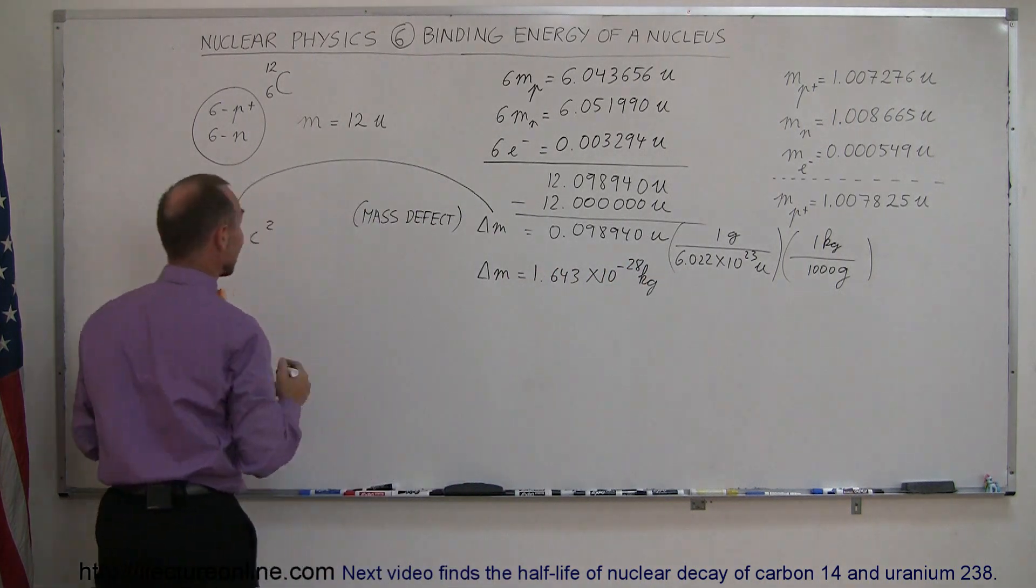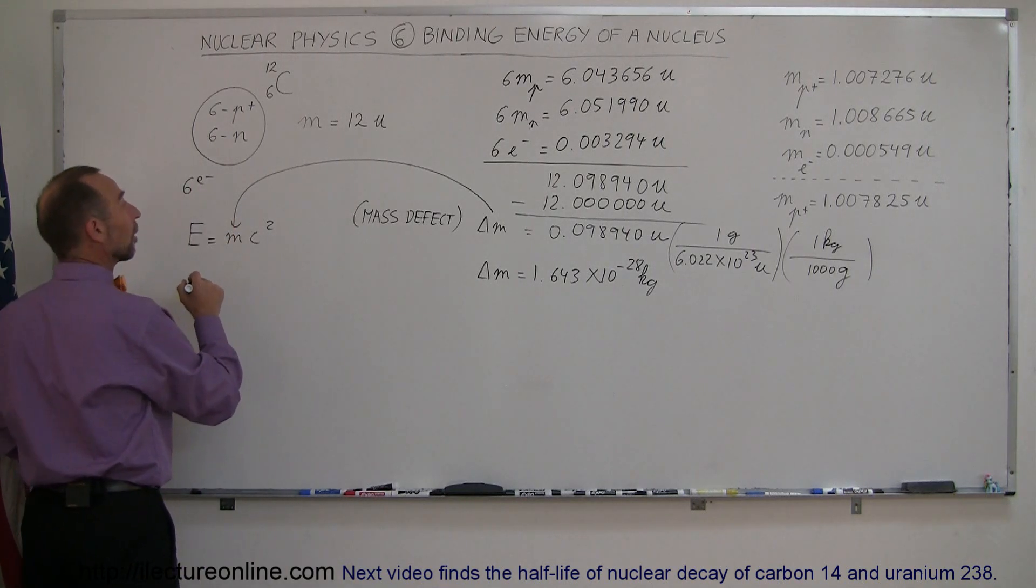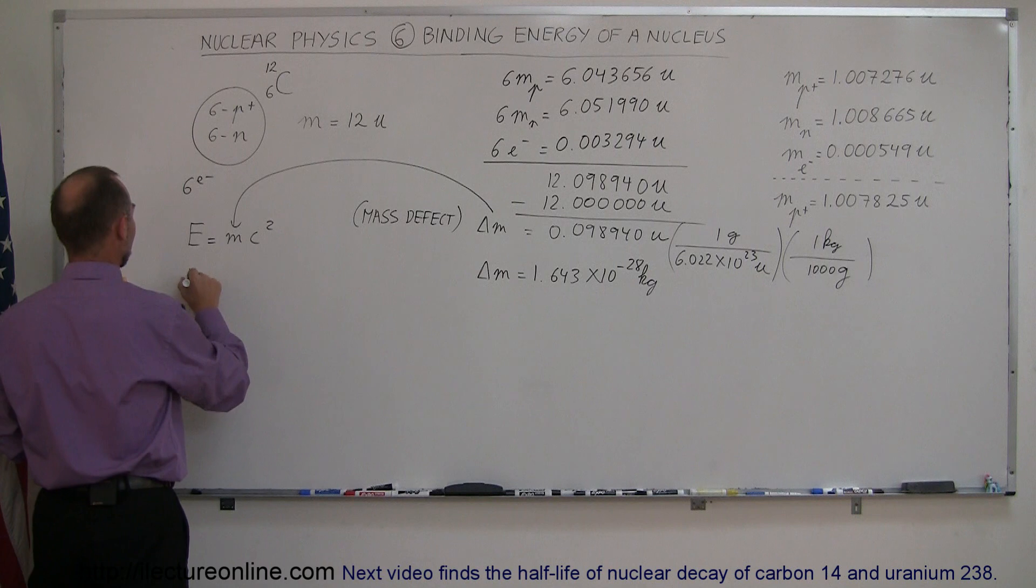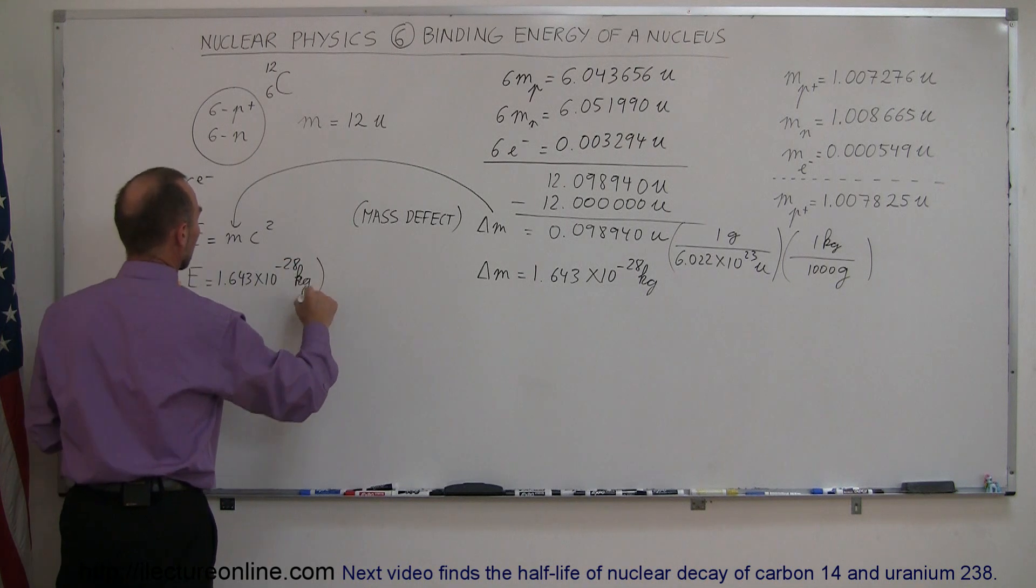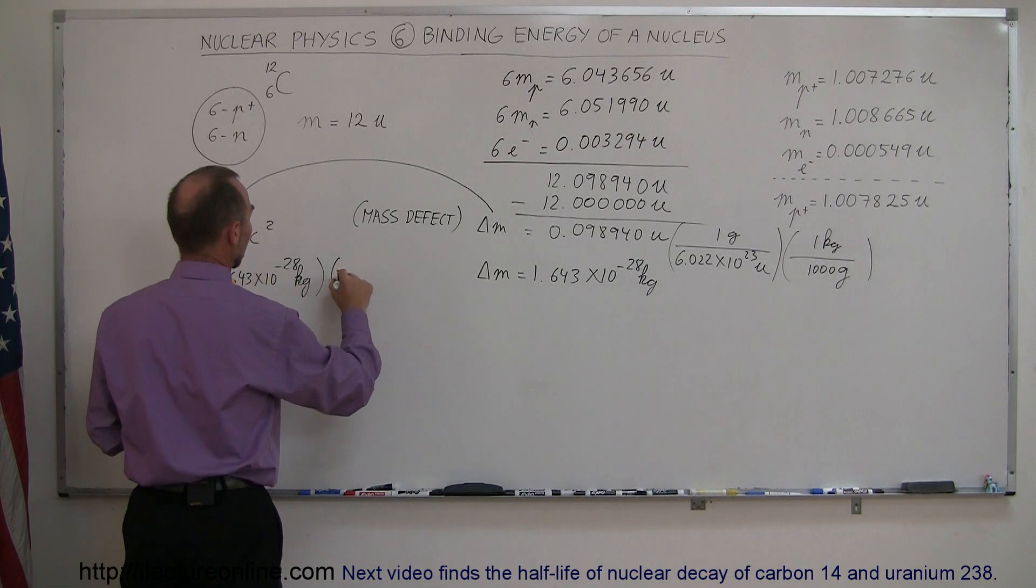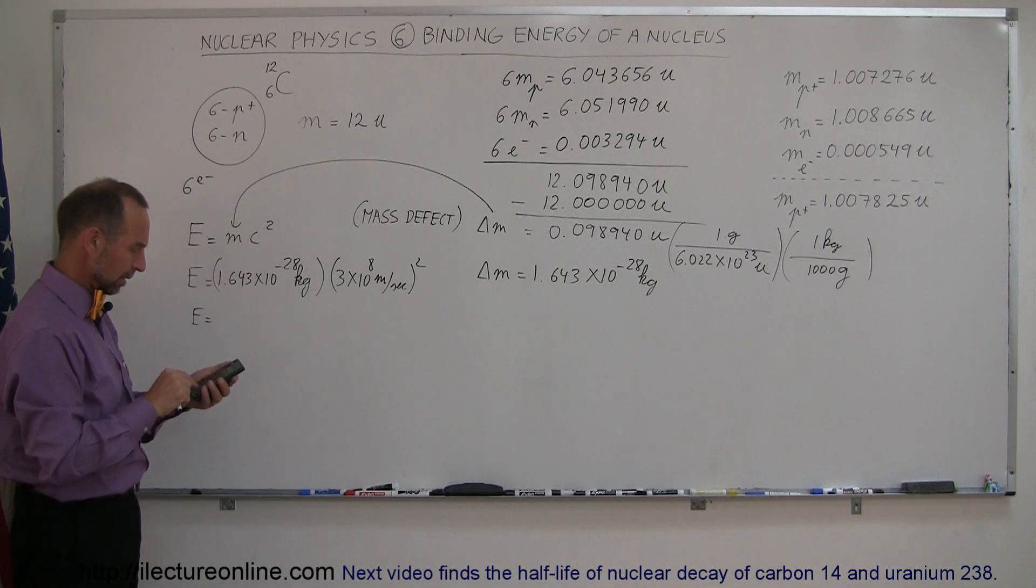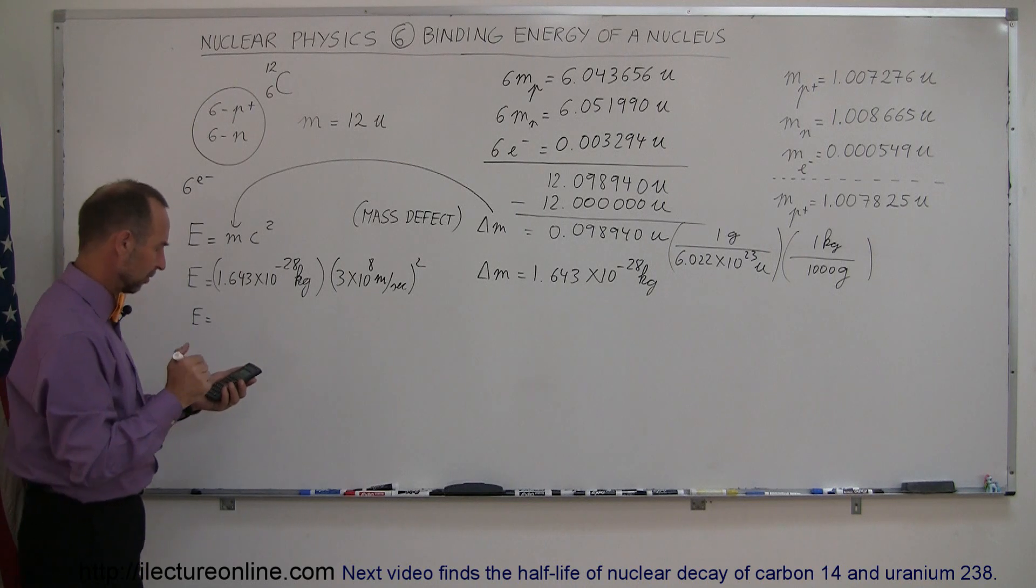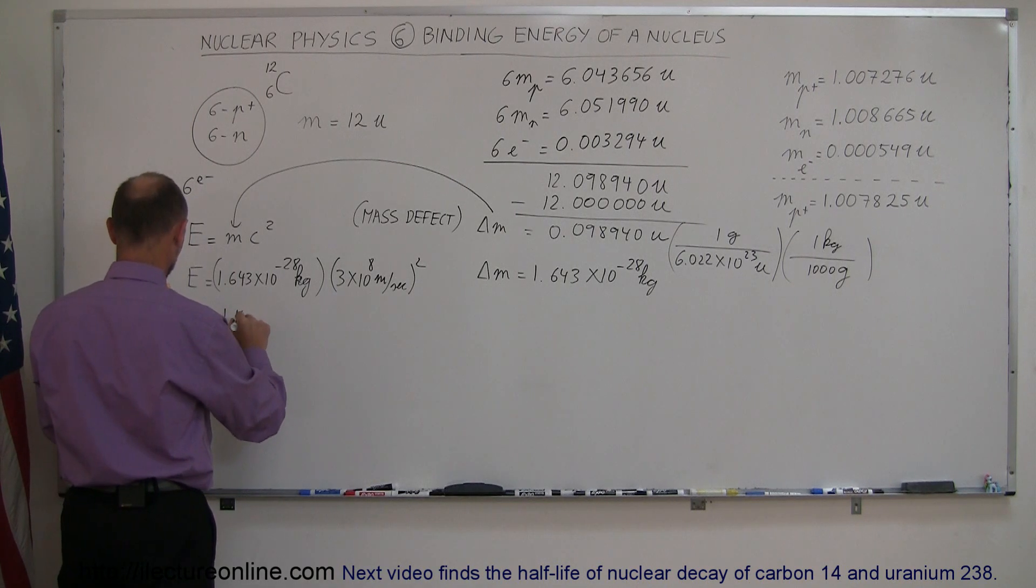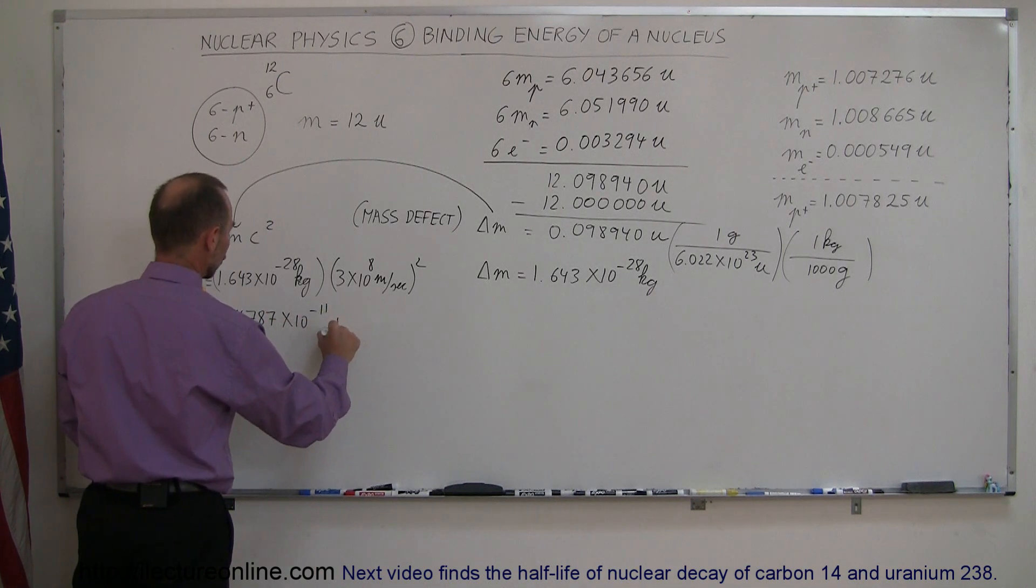So now you plug that in here, and we calculate the energy that's released when you put those protons and neutrons together. So the energy is equal to 1.643 times 10 to the minus 28 kilograms, multiply times the speed of light squared. So times 3e8, we square that, and we get 1.4787 times 10 to the minus 11 joules.